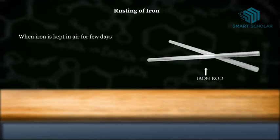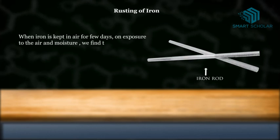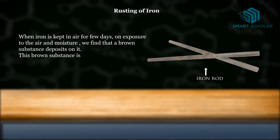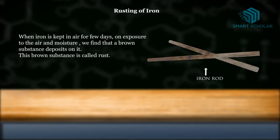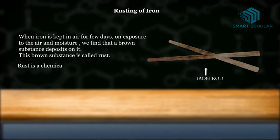Rusting of iron. When iron is kept in air for a few days on exposure to air and moisture, we find that a brown substance deposits on it. This brown substance is called rust.